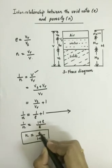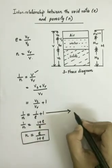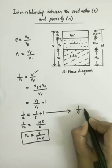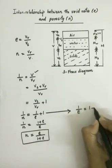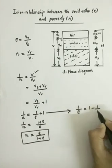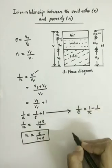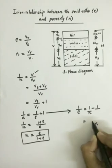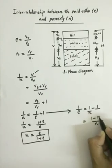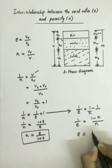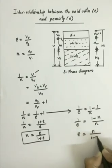Now we can express the void ratio in terms of porosity. So from this equation, 1 by E can be written as 1 by N minus 1. So when you solve this, it becomes E equal to N by 1 minus N.